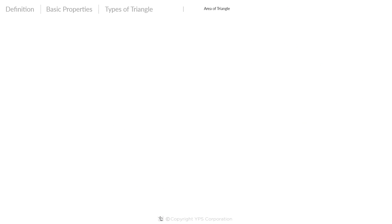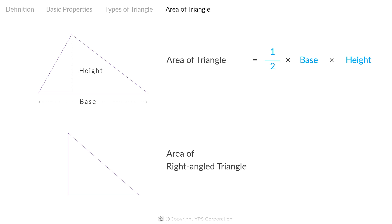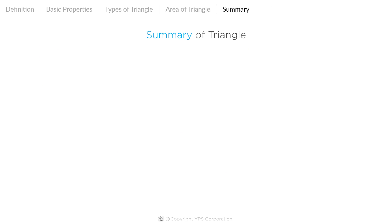After discussing the properties and types of triangle, let's highlight the formula for calculating the area of a triangle. The area of any triangle is ½ × base × height. Whereas the area of a right angle triangle equals ½ × the product of the two perpendicular sides.